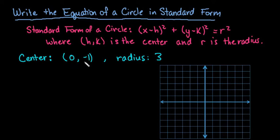So what we're given is, we're given that the center is at 0, negative 1, so this would be our h and our k, and then r would be the 3.